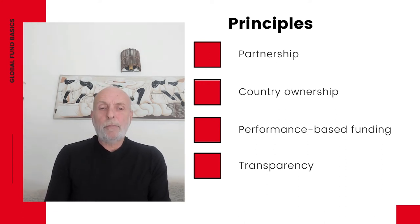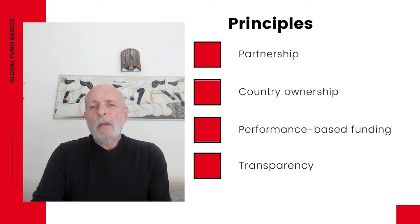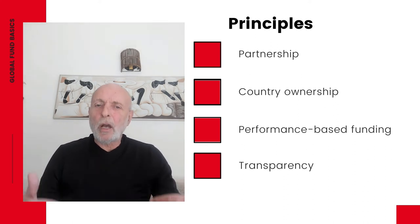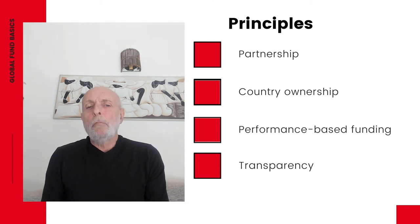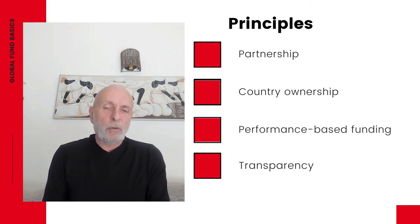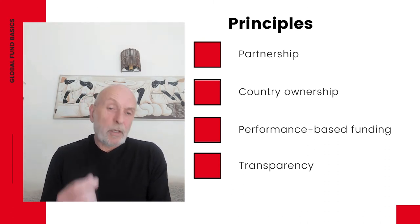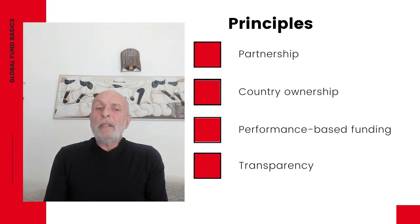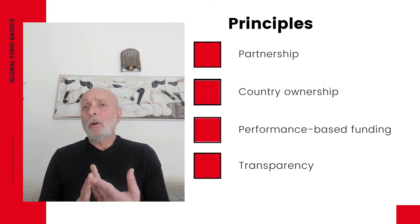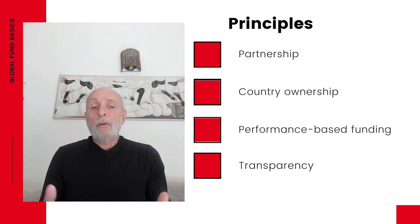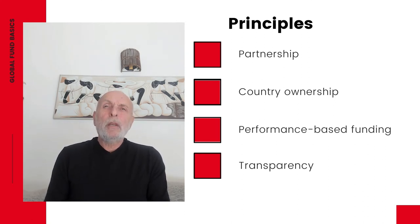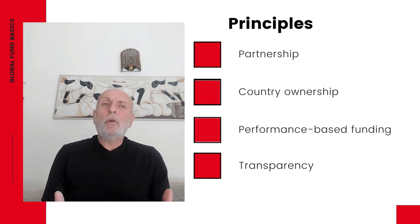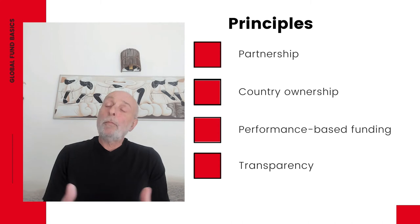The third principle is performance-based funding, which means programs need to have proven, effective, and time-bound results in order to receive continued funding. Local Fund Agents, or LFAs, monitor and verify program performance and results. The final principle is transparency. The Global Fund operates with a high degree of transparency in all of its work, including applications for funding, funding decisions, grant performance, results, governance, oversight, and all audits and investigations by the Office of the Inspector General, or OIG, which are openly published on the website.